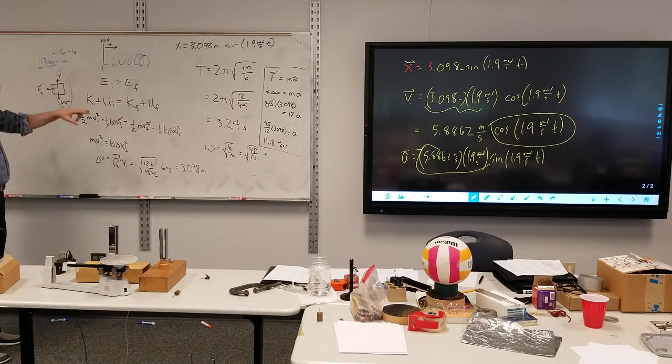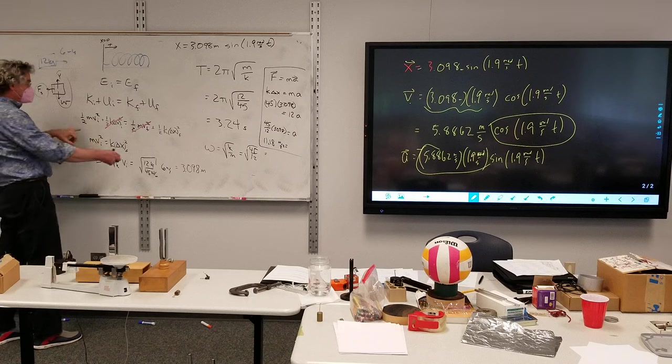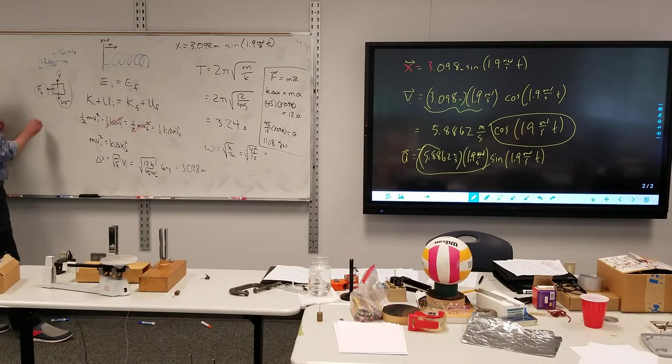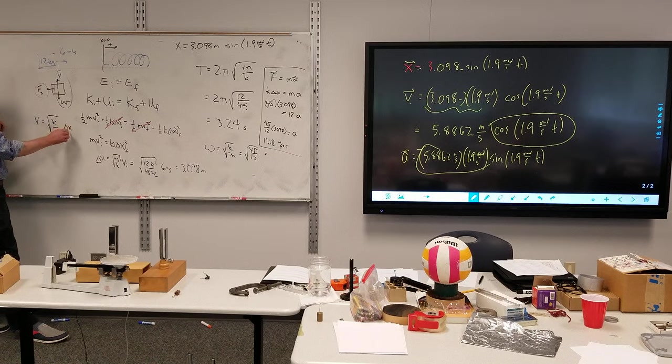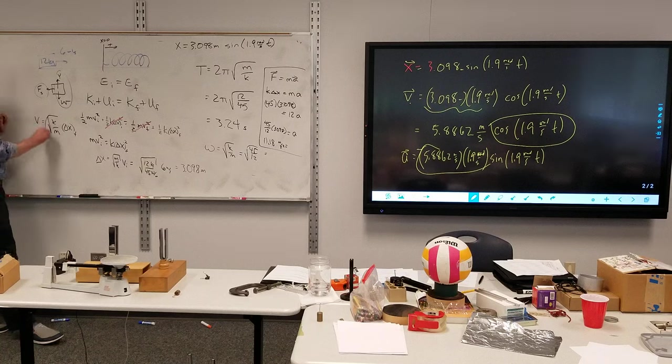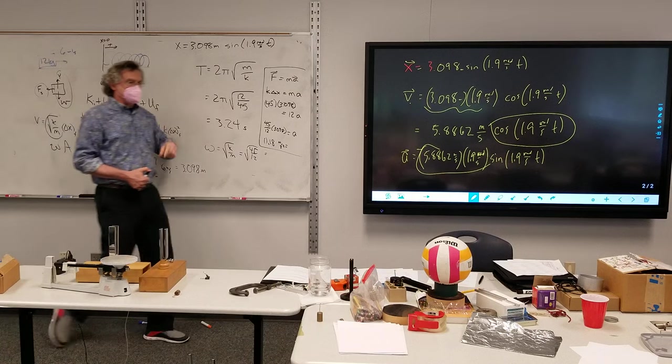But if you did the energy, if you look at it from the energy point of view, the half's canceled out, you're left with V is equal to the square root of K over M times that maximum, which is just omega times the amplitude, which is what we do here.